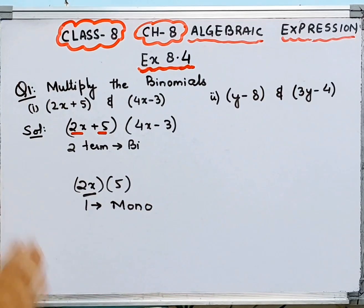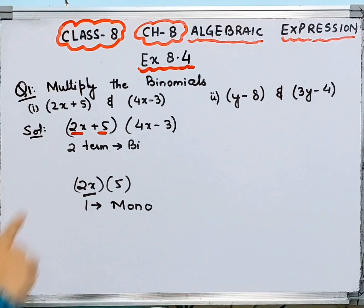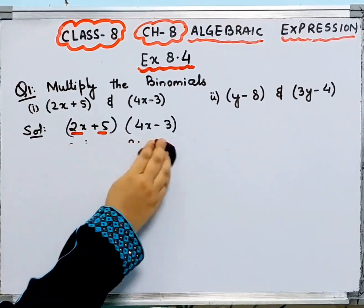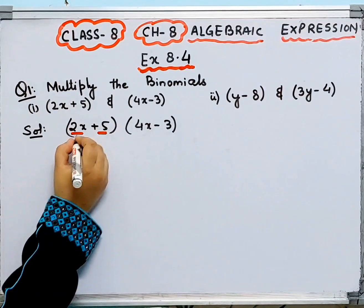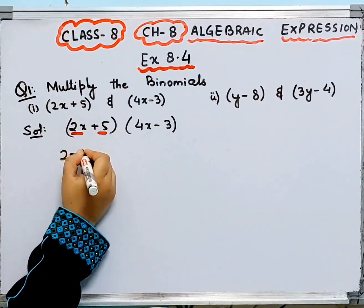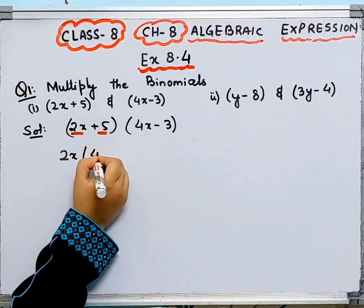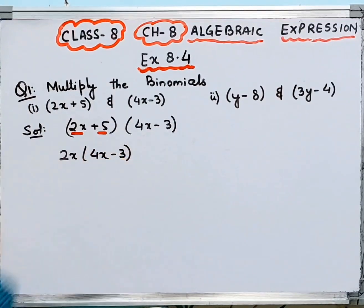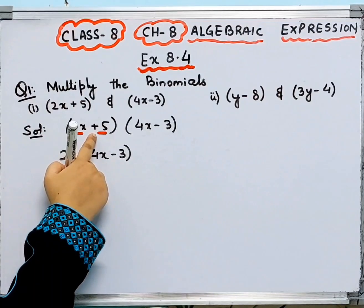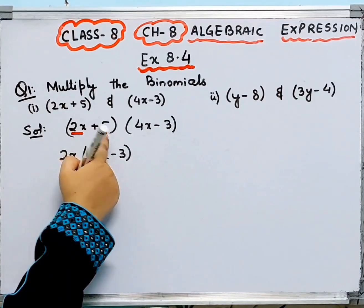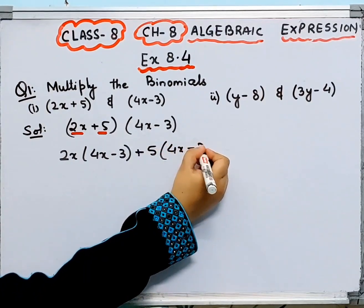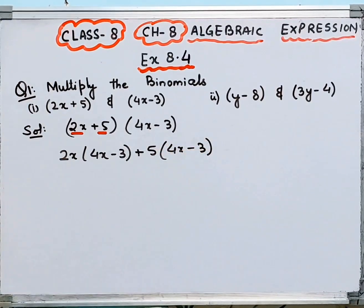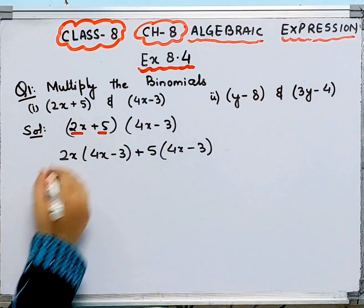This concept is clear — binomials and monomials. You have two binomials given. How do you multiply? First, we will multiply 2x by the whole expression 4x minus 3, and then we will multiply plus 5 by 4x minus 3.